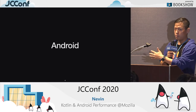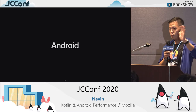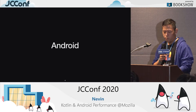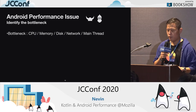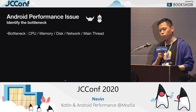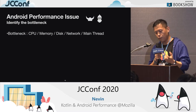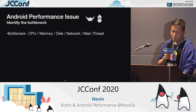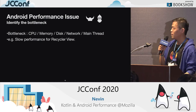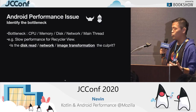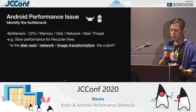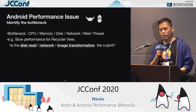Now I'm going to talk about Android. Before we talk about Android performance issues, we found there's a very critical mindset: identifying the bottleneck. The bottleneck is the place where we compete for resources — CPU, memory, disk, network, main thread. For example, for slow RecyclerView performance, it could be slow disk read, slow network request, or slow image transformation — IO and CPU. Which one is the culprit? It's very important, because sometimes we're fixing the wrong problem and the issue doesn't actually get fixed.